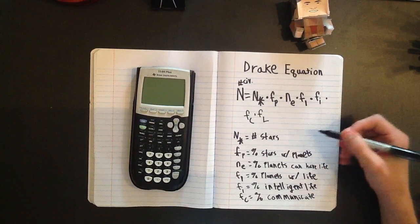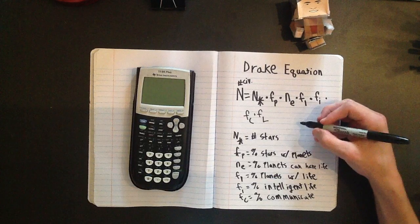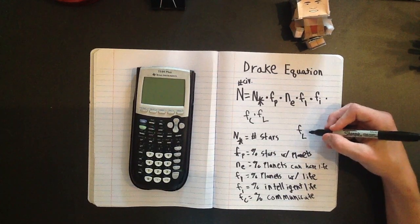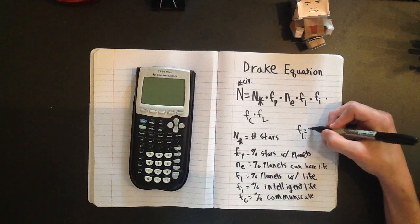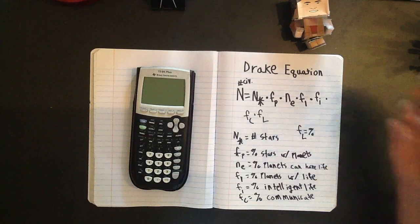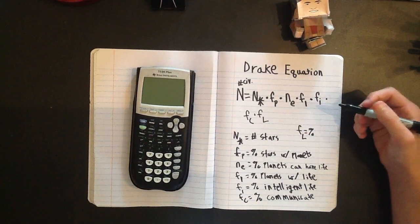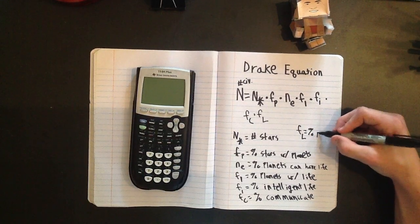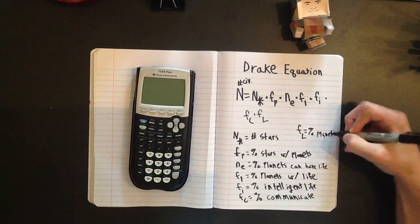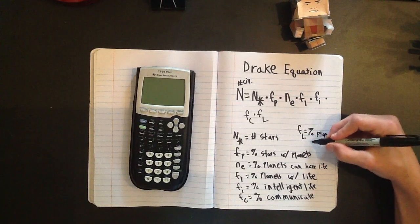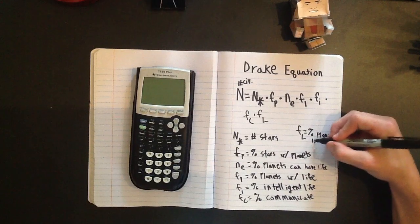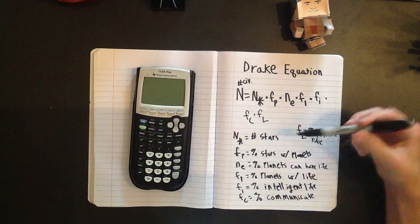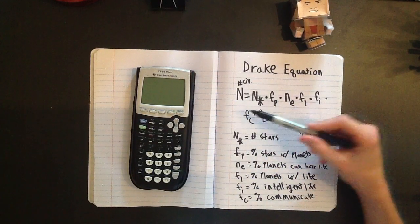And we're going to put F sub big L up here because we have no more room. F sub big L is the chance that they are on that planet long enough to broadcast to us, so what percentage or what ratio of the planet's life they occupy. So that's a lot of information to take in right there. All of this is taken into this equation.